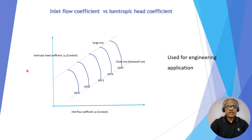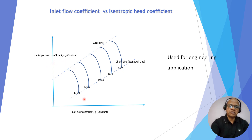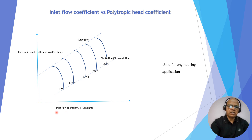This is another way to represent compressor performance: x-axis is the inlet flow coefficient phi and y-axis is the isentropic head coefficient psi, which is constant. We can draw this with different IGB positions, but again this is used for engineering applications. Similarly, we can show inlet flow coefficient phi versus polytropic head coefficient psi-p — similar but with a different y-axis, that is the polytropic head coefficient. Again, this is used for engineering applications.